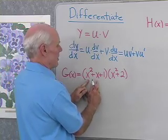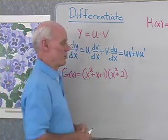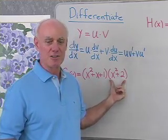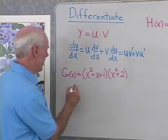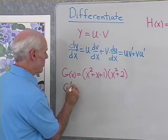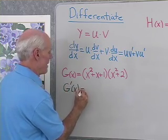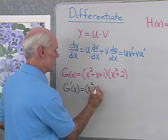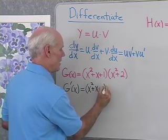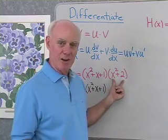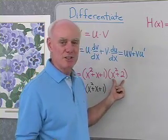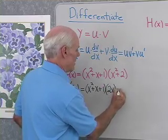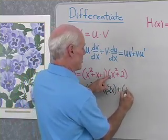I have g(x) = (x² + x + 1)(x² + 2). So g(x) is the product of two functions of x. Let's use the product rule to find this derivative. g'(x) is going to be this first function with no change in it, x² + x + 1 times the derivative of this function. I can differentiate 2x plus 0, which is 2x.